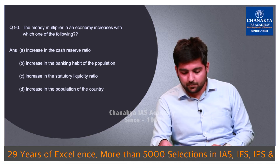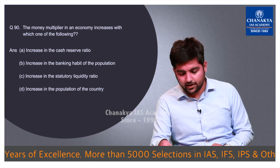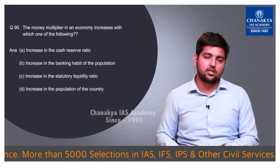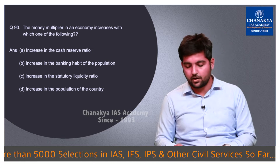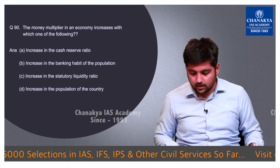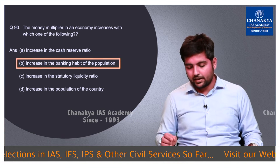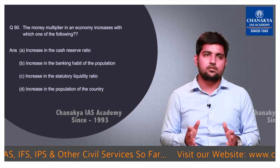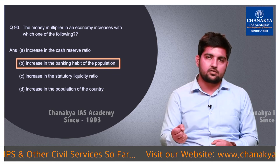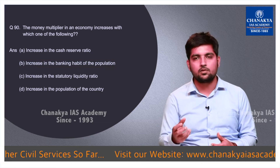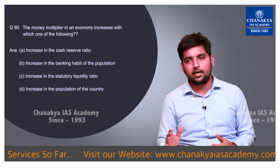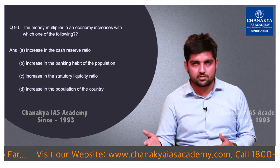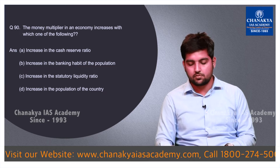Question number 90 asks with what the money multiplier in an economy increases. This is a very fundamental question and the correct answer is B — increase in the banking habit of the population. When money goes into the banking system, the bank can lend it, creating a chain, and the multiplier effect increases. Hence the correct option is B.